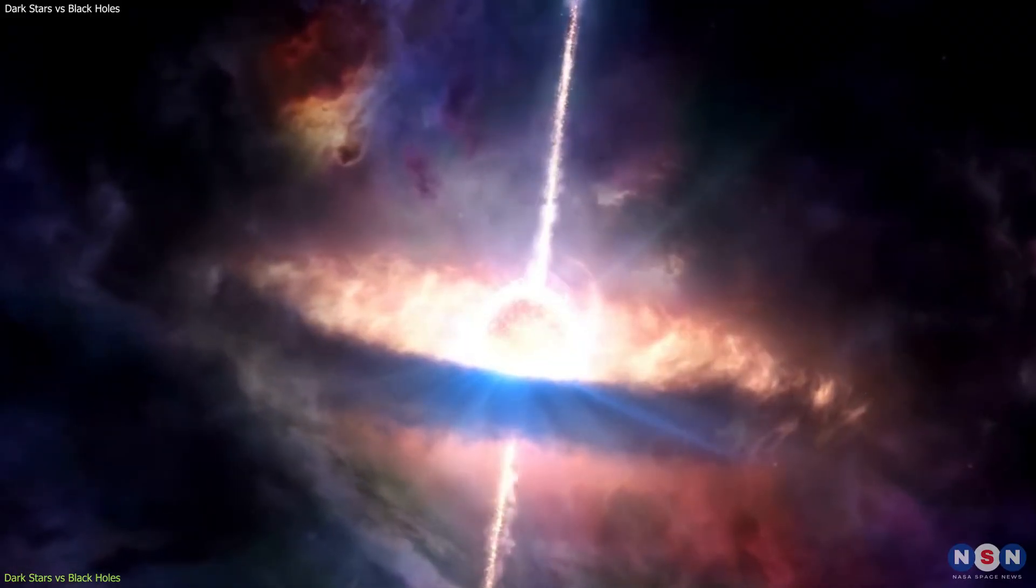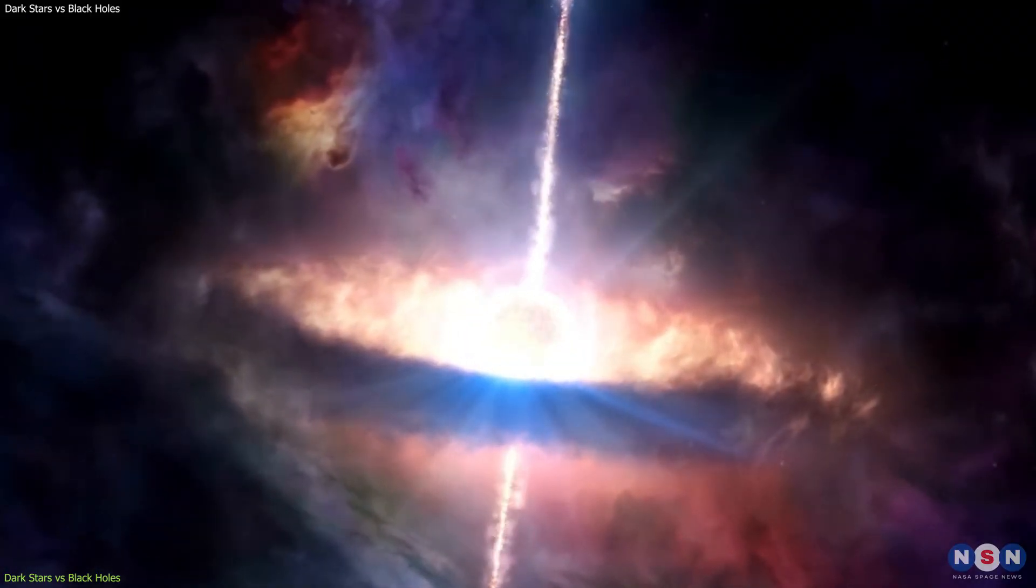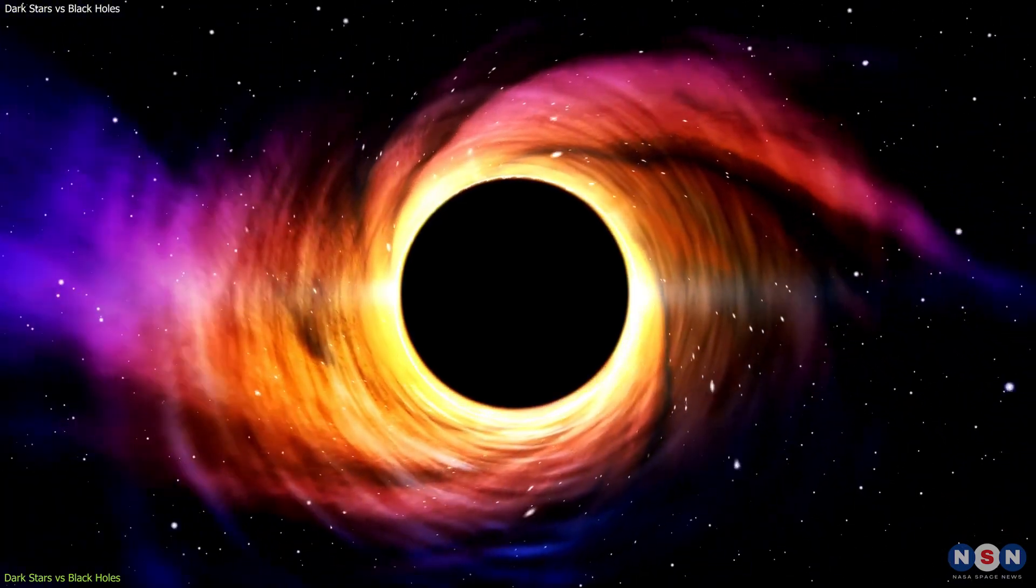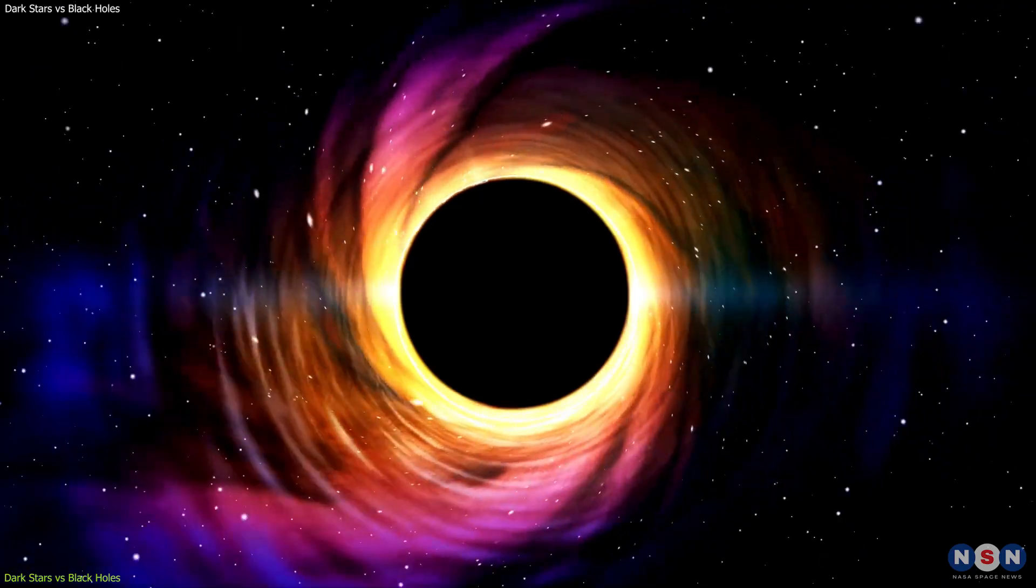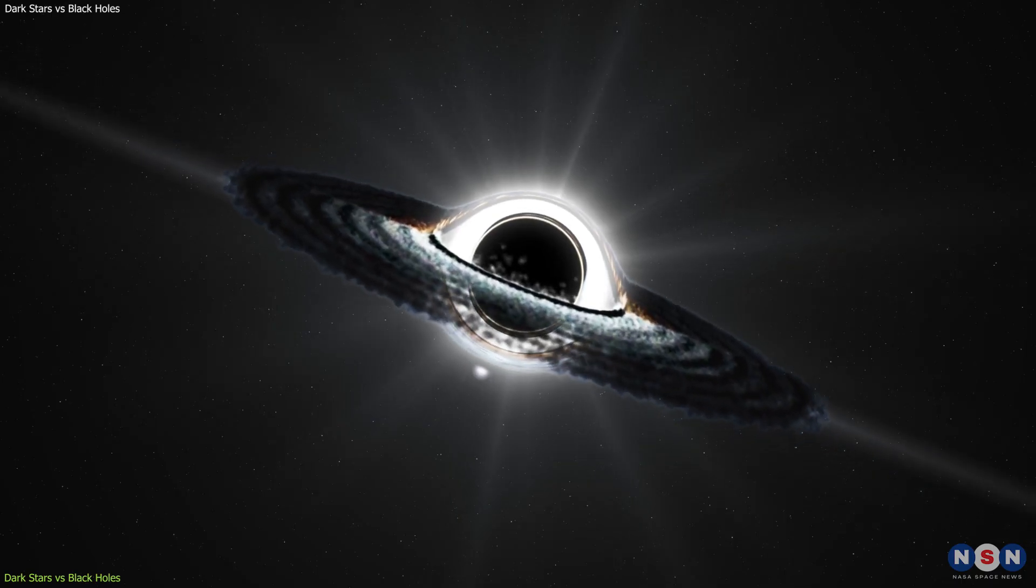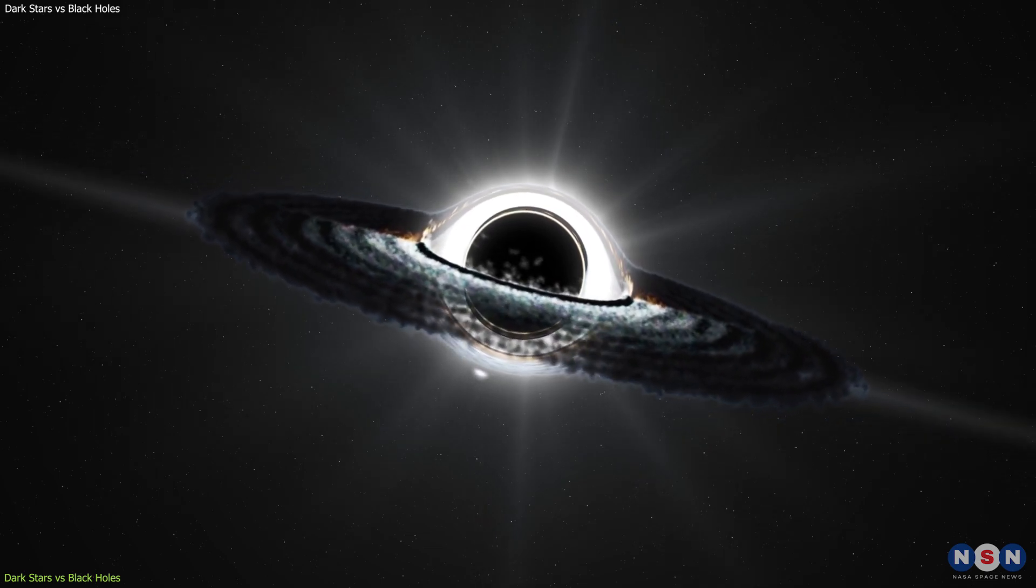Another difference is how much light can escape from them. A black hole does not let any light escape from it due to its escape velocity being equal to or greater than the speed of light. A dark star lets some light escape from it due to its escape velocity being slightly less than the speed of light.